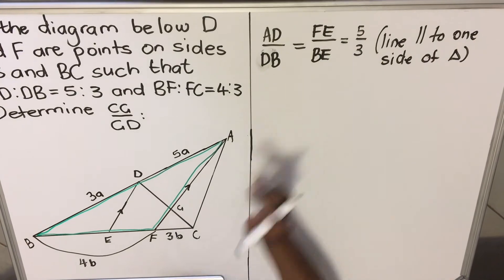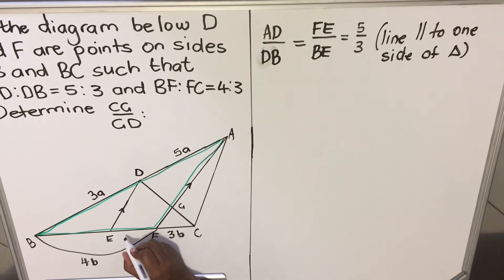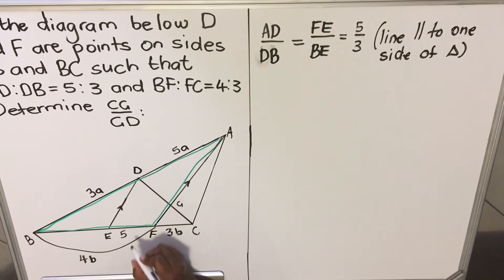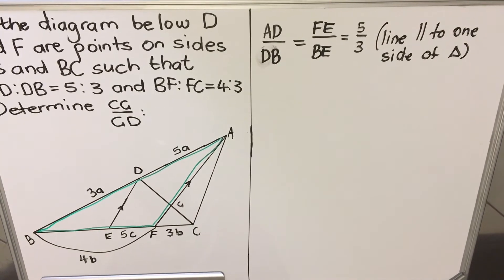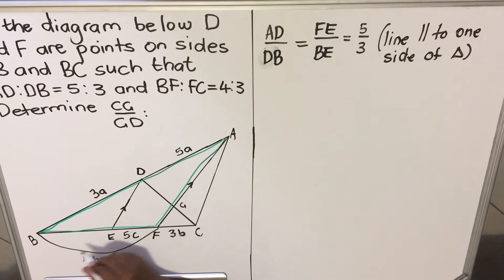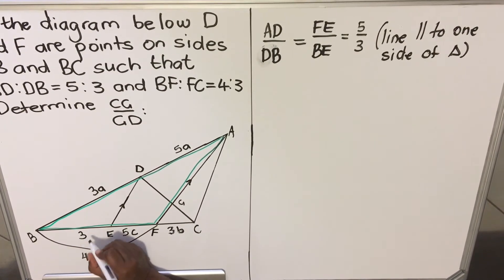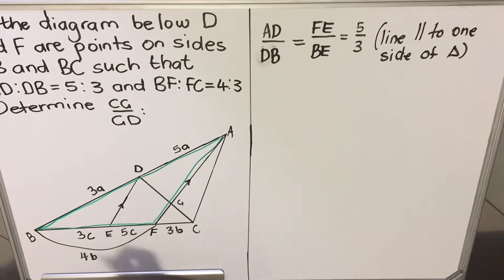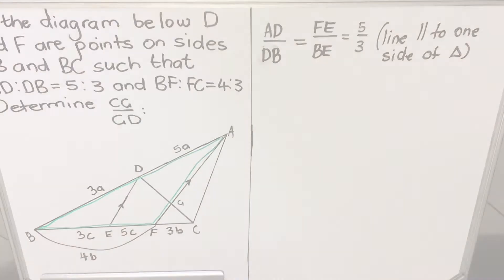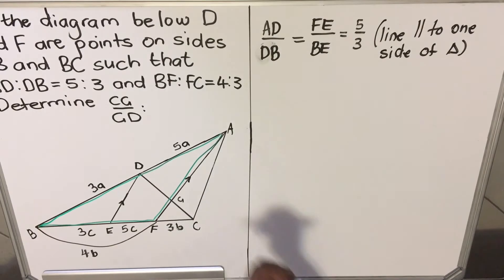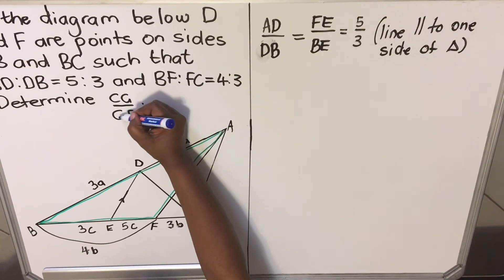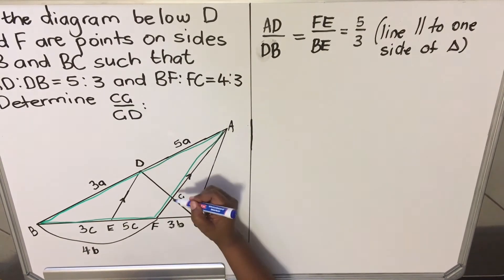FE — here is my FE — the ratio is 5, so I am going to call it 5C using a different symbol C. And BE is 3C. Now I have my ratios. Now I need ratios for CG and GD.